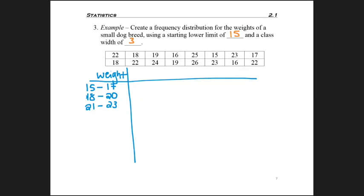so I do need to keep going. So, I'm going to add 3 to get 24, and add 3 to get 26, and 26 will fit in that last class, so I can stop making classes.